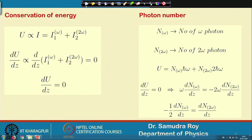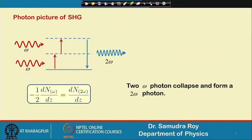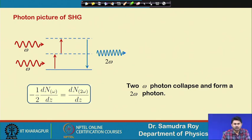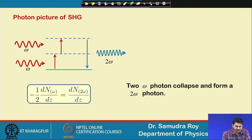This is physically meaningful: 2ω photons are generated because two ω photons merge — two photons of frequency ω collapse to form one photon of 2ω. So for every two ω-photons lost, one 2ω-photon is gained, which is exactly what the expression -(1/2)·(dN_ω/dZ) = dN_2ω/dZ says. This is the Manley-Rowe relation in terms of photon numbers.